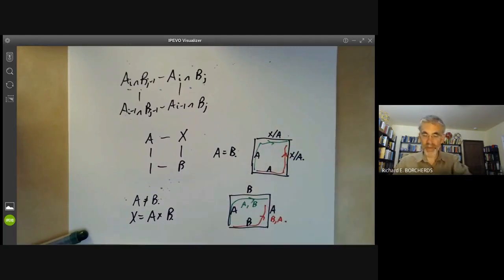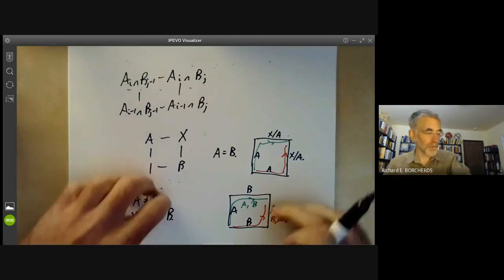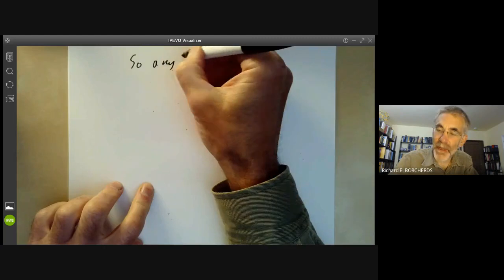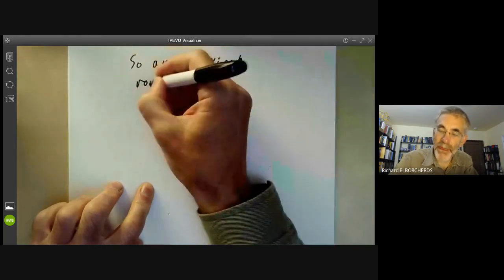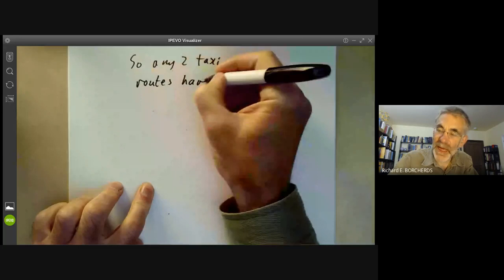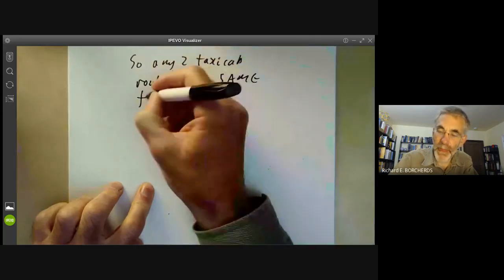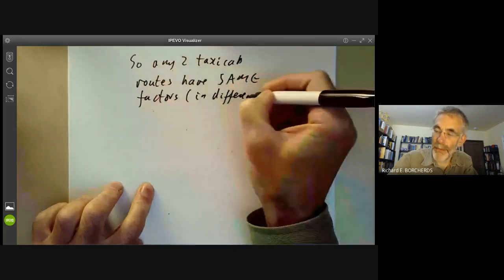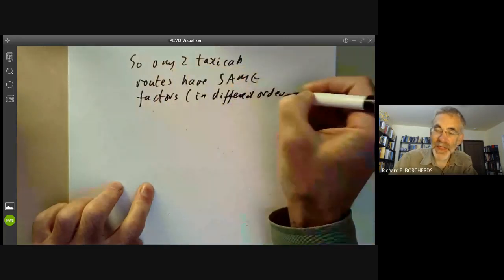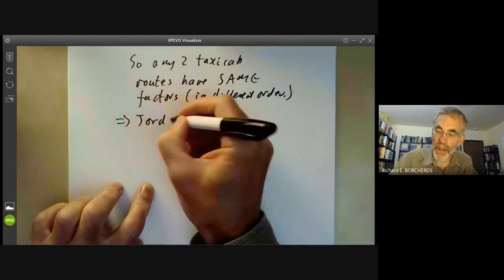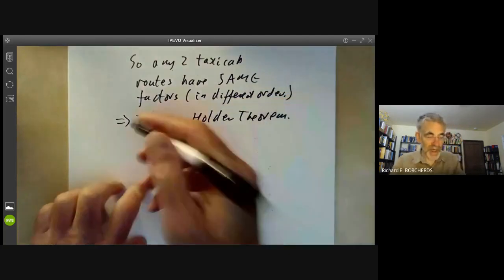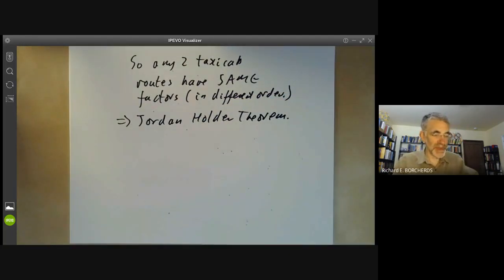So any two taxicab routes have the same factors in a possibly different order. So this proves the Jordan-Holder theorem. Which says that the number of times any given simple group occurs in a composition series doesn't depend on the composition series.